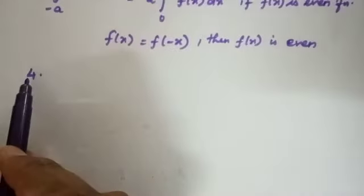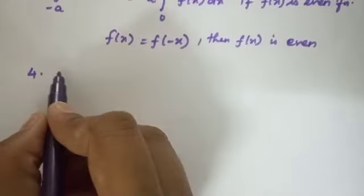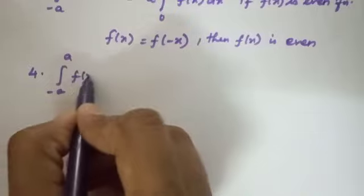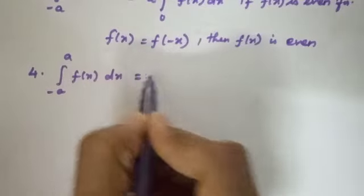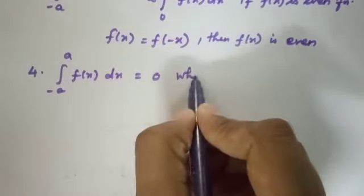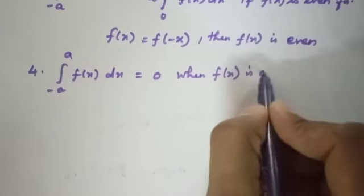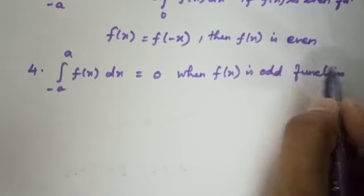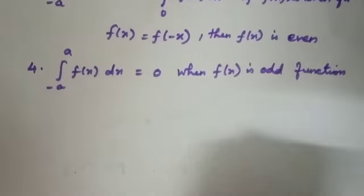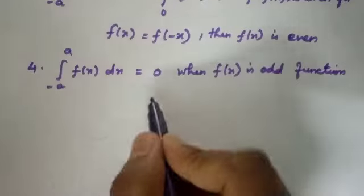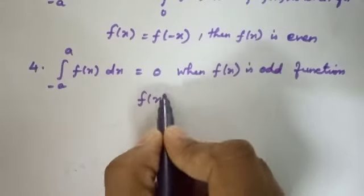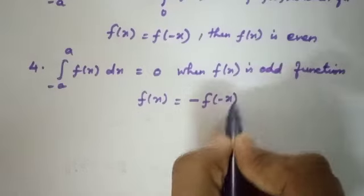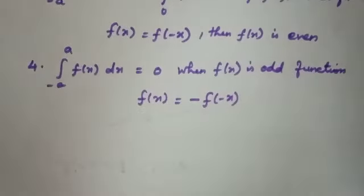The fourth property is: the integral over minus a to plus a of f(x) dx is equal to 0 when f(x) is an odd function. For an odd function, f(x) equals minus f(minus x).